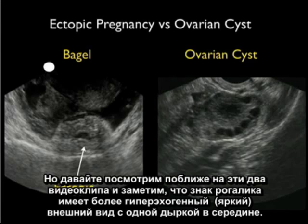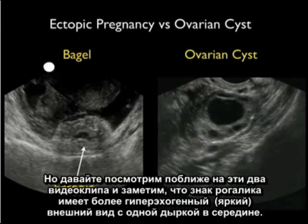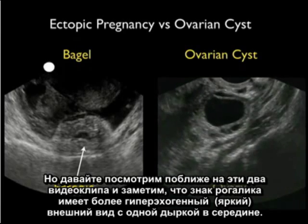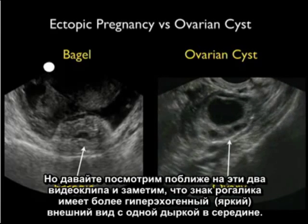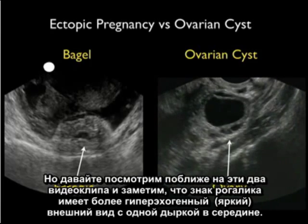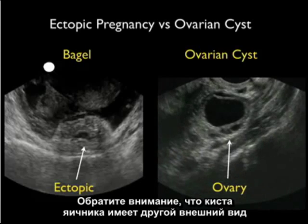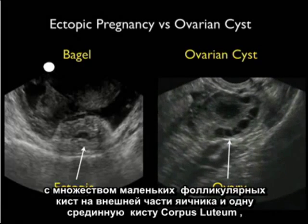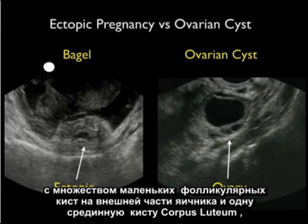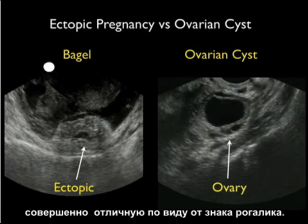Looking closer at the two video clips, notice that the bagel sign has a more hyperechoic or brighter appearance with a single hole in the middle. The ovarian cyst has a different appearance with multiple small follicular cysts to the outer portion of the ovary and a single midline corpus luteum cyst — very different than the bagel sign.